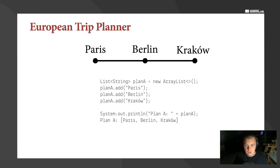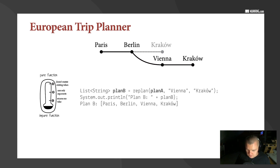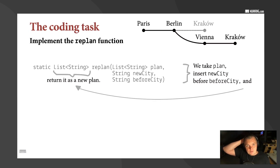We'll start with Java, see some problems, and then use functional programming to solve them. Let's have a simple task: we have a trip to plan — say we want to go to Paris, Berlin, and Krakow; that's plan A. A friend suggests a different itinerary and we visit Vienna before Krakow. We need a function called replan that takes a plan, a new city, and a city to insert before. So we create in Java a replan function: take plan, insert new city before city — that's what the function needs to do. Let's switch to the code.